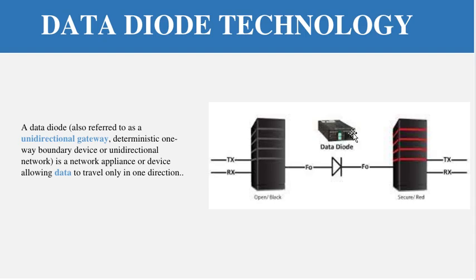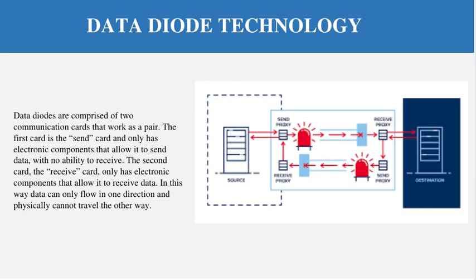A data diode is a device where data travels in a single direction only — from source to destination — and dual-way or bidirectional traffic is not possible and not allowed.